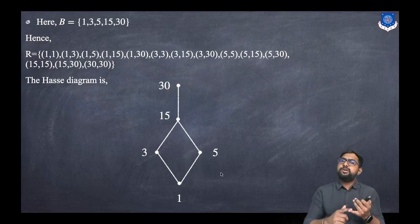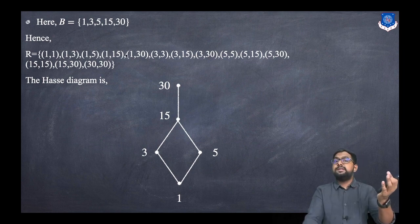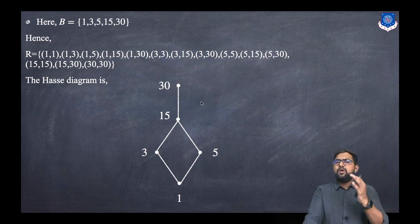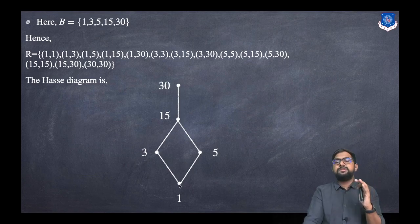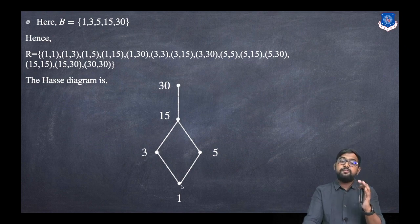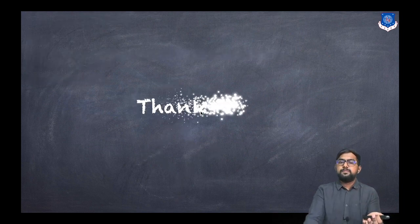This is the Hasse diagram for {1, 3, 5, 15, 30}. Notice there are no self-loops and no directions, yet using this Hasse diagram we can recover the entire relation — all self-loop pairs are implied by reflexivity, and all transitive pairs such as (1,15) are implied because 1 is related to 3 and 3 is related to 15. Thank you.